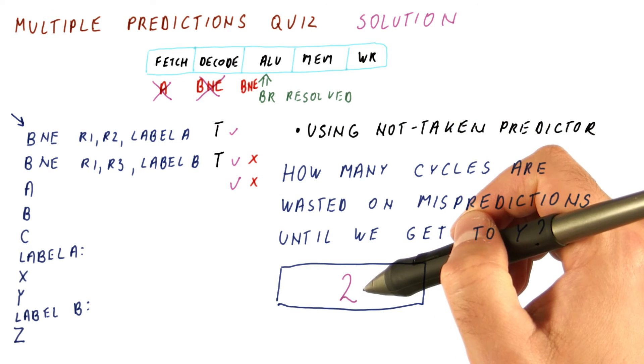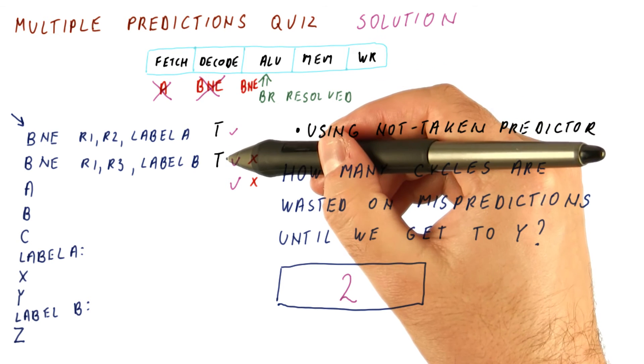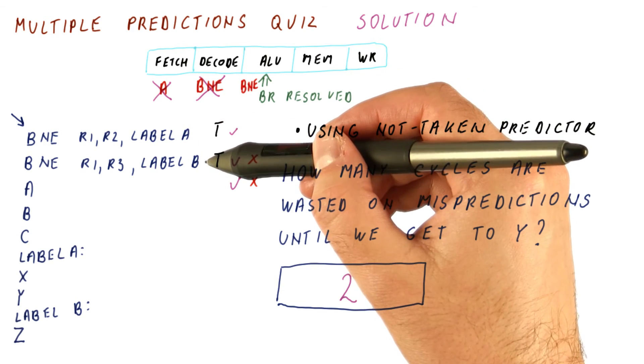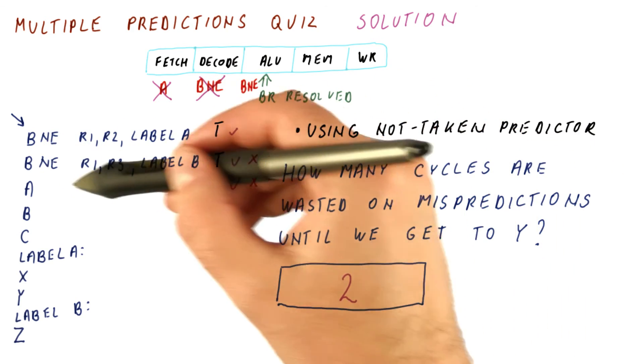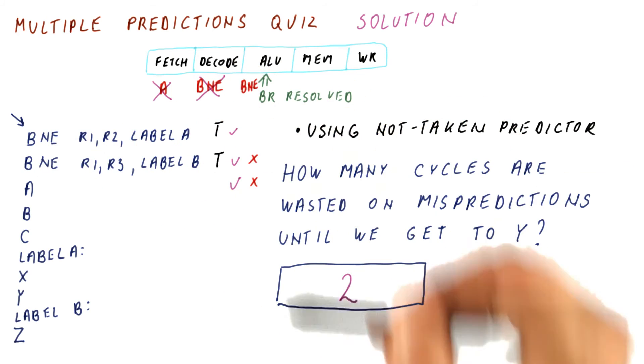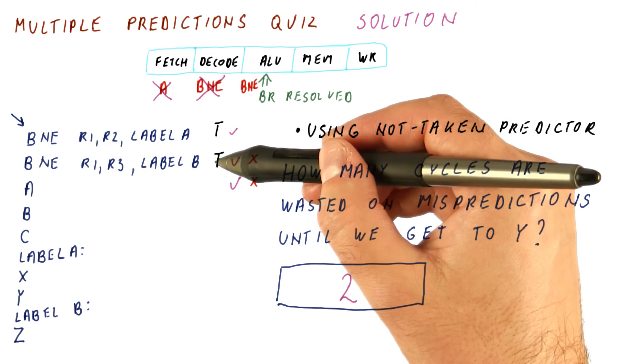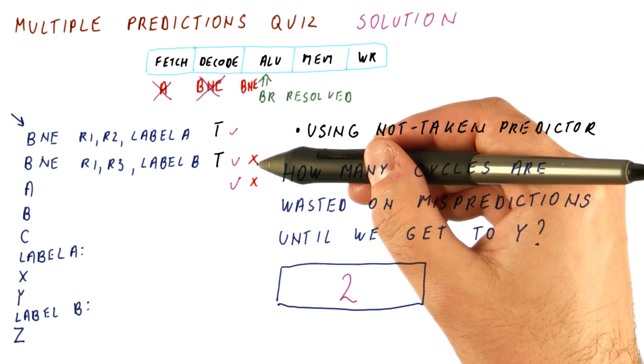And that's why we had a two cycle penalty, and not four cycles of penalty, because technically these two were mispredicted, but really this one should never have been executed in the first place. But this one was flushed before it could trigger a flush of its own.